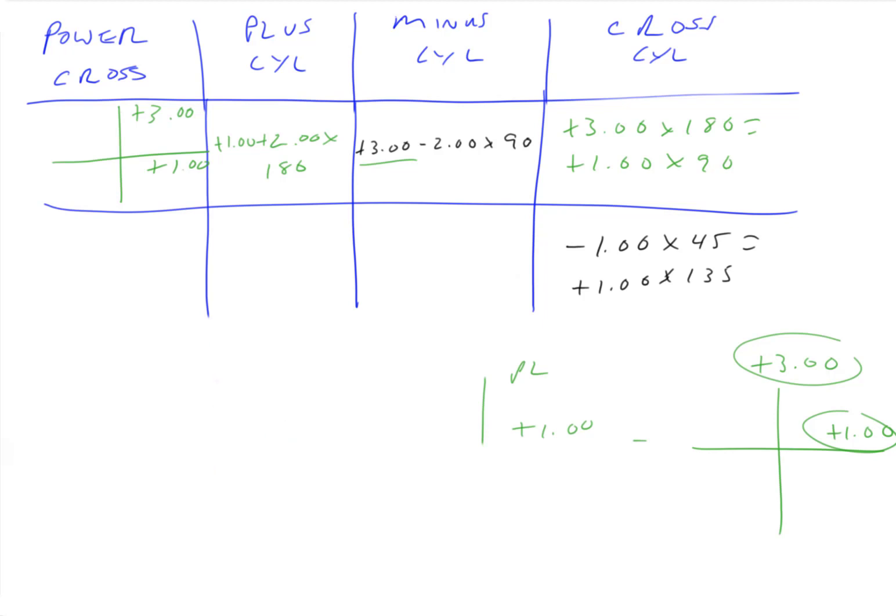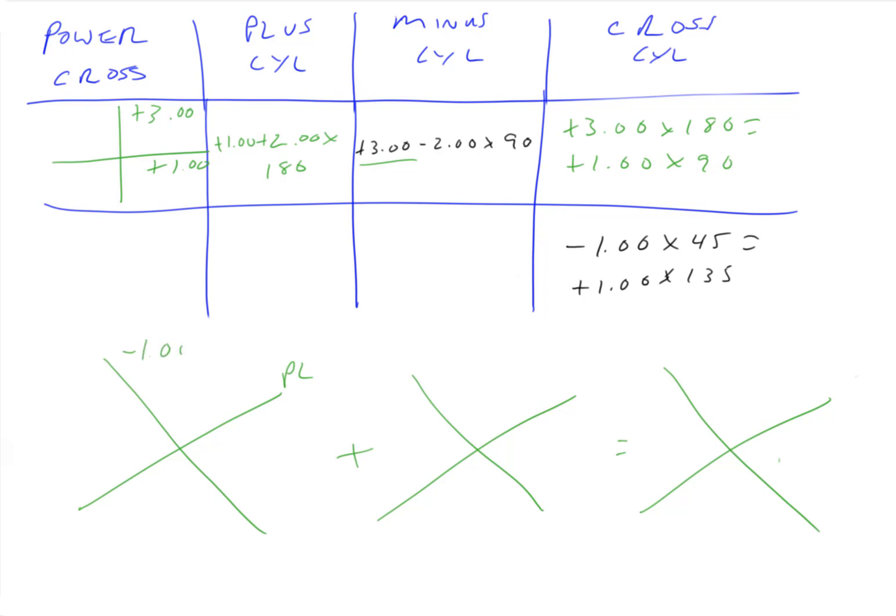Alright, getting the hang of this. And now the last one. So here our axes are going to be 45, 45, and 135. So we know they must look like this. So minus 1.00 axis 45 and plus 1.00 axis 135.